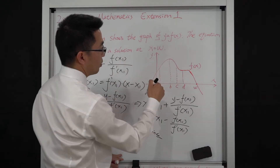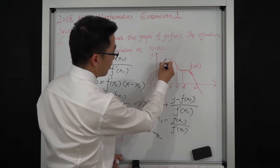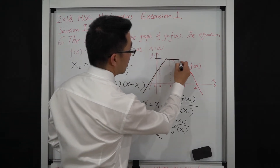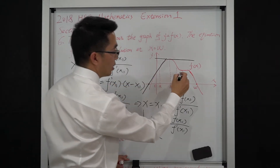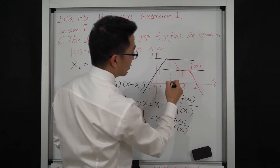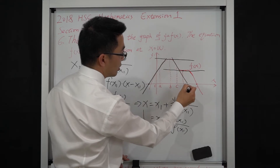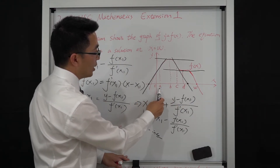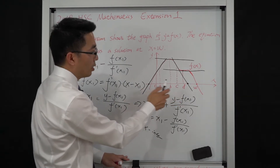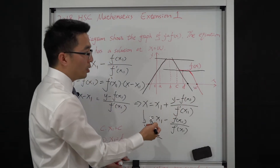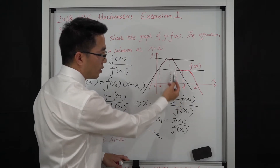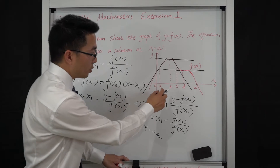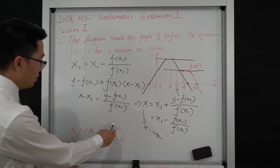Let's look at the gradient at these four points. For point a, the gradient line is roughly cutting the x-axis at this point. Point b cannot cut the x-axis, and the same thing applies to d. For c, it is cutting with the x-axis here. Comparing a, b, c, d — only a and c can have an x-intersection. Obviously this point is closest to w, which means point c gives a second approximation closest to the root. The answer for this question is C.